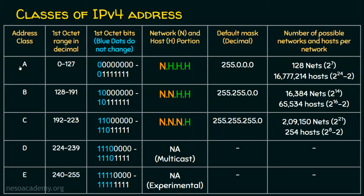In class A, the first octet is the network address. Though we have 8 bits, we can use only 7 bits. So the total number of networks possible is not 2 power 8, it's 2 power 7.